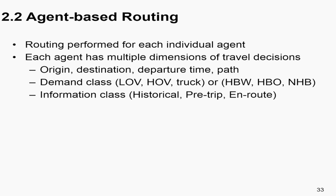Each agent has multiple dimensions of travel decision: OD, departure time in minutes, path, demand type, and information class. By using demand class or demand type - for example, when you try to prevent the use of heavy-duty trucks in the CBD area during business hours - you can add tolls along the contour of a city to make sure only passenger cars can enter the CBD during peak hours. Those trucks will be rerouted to other regions or will select routes after the business hour.